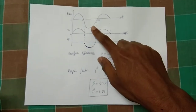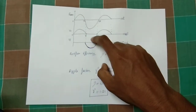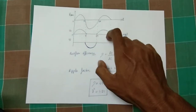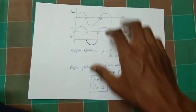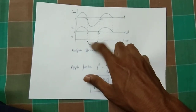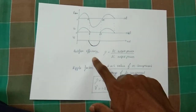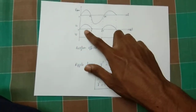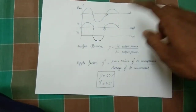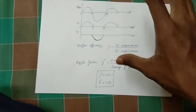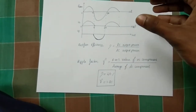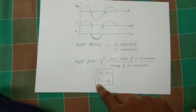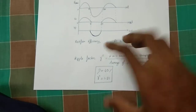This is the negative cycle. This is the positive cycle. This is the negative cycle. Here is the negative cycle. If you have a positive cycle, this is the negative cycle. Pulsating is a ripple factor, so we can remove the filter from the capacitor. The efficiency is 40% and the ripple factor is 1.21%. It is a half-wave rectifier.